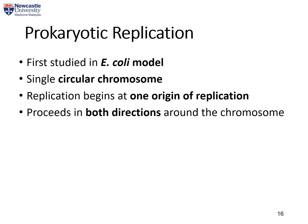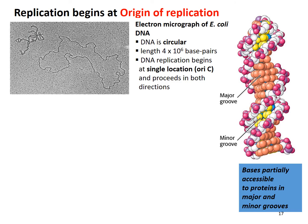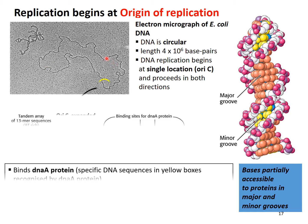DNA replication was first studied in prokaryotes by using E. coli as a model. E. coli has a single circular chromosome, and replication will start at one specific sequence known as the origin of replication. Once it starts, it will proceed in both directions around the chromosome. Replication always begins at the origin of replication — in the single circular chromosome of E. coli, the origin of replication is known as the oriC.